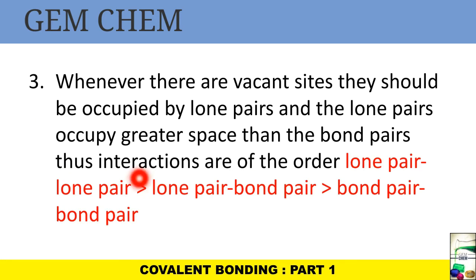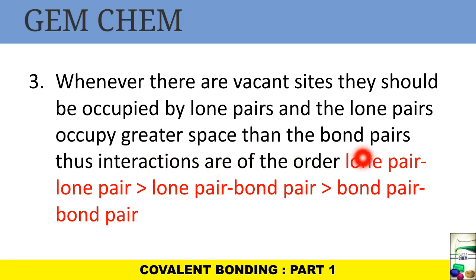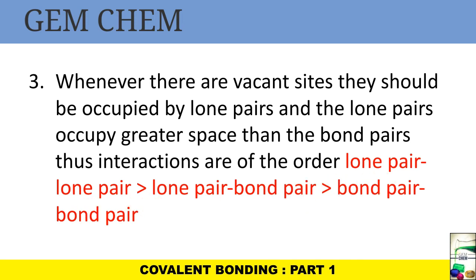The third rule states that whenever there are vacant sites — that is, fewer atoms than the electron-count positions — those sites are occupied by lone pairs. Lone pairs occupy greater space than bond pairs. Thus the repulsion order is: lone pair–lone pair > lone pair–bond pair > bond pair–bond pair.